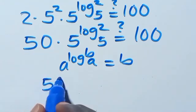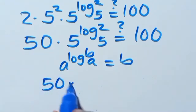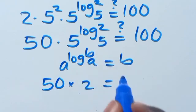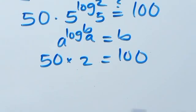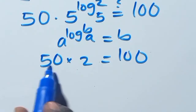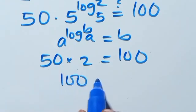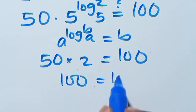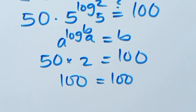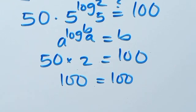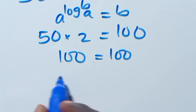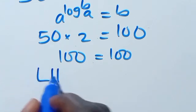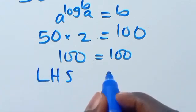So 50 times 2 equals 100. The left-hand side equals the right-hand side, confirming our answer is correct. Thank you.